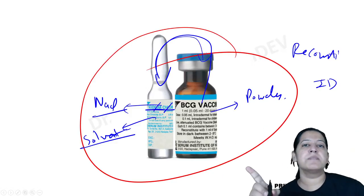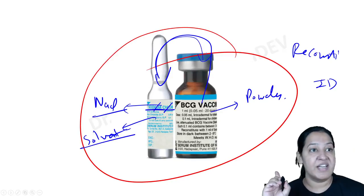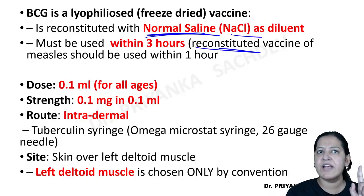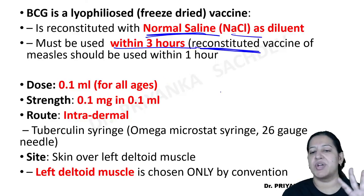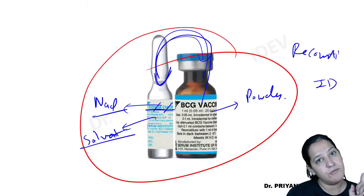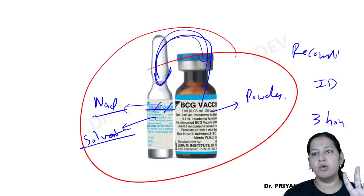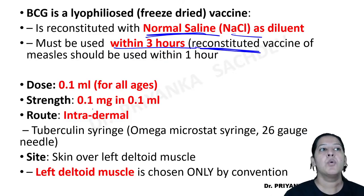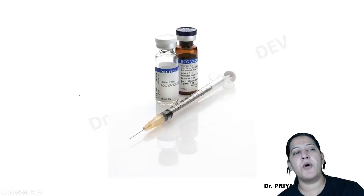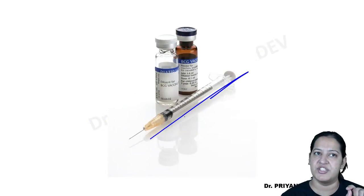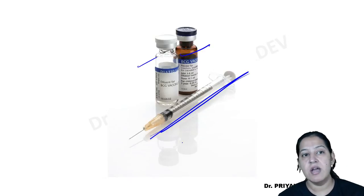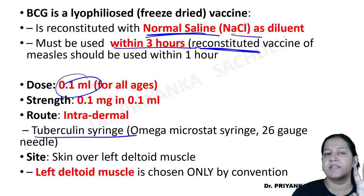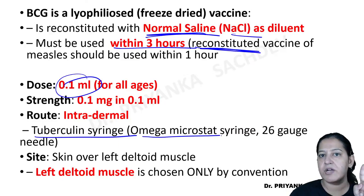Question 6: What is the isoniazid dosage in infants? The correct answer is 5 mg/kg per oral. For chemoprophylaxis it is 10 mg/kg, but for treatment it is 5 mg/kg per oral for both infants and adults. Isoniazid is given orally, not by injection.